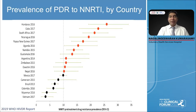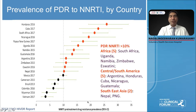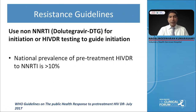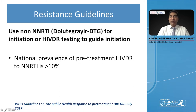WHO does resistance surveillance every year at different sites, and the survey very clearly shows that baseline NNRTI resistance — that is, resistance to nevirapine and efavirenz — is rising in developing countries, going beyond 10% and in our region almost reaching 10%. WHO has given guidance that in regions where national prevalence of pre-treatment HIV drug resistance to NNRTIs is 10% or more, use non-NNRTI-containing antiretroviral therapy, preferably a dolutegravir-containing regimen to initiate treatment.